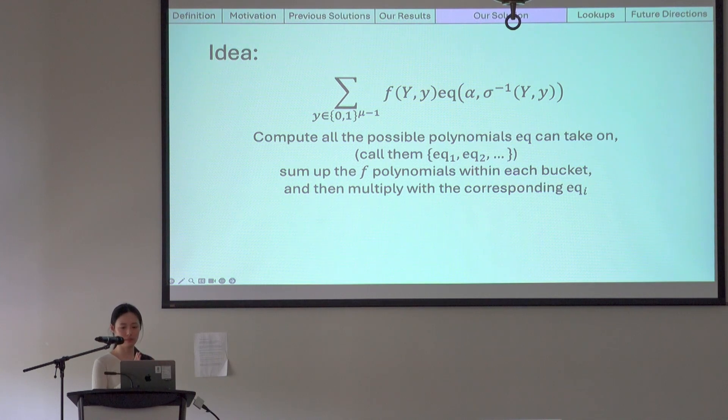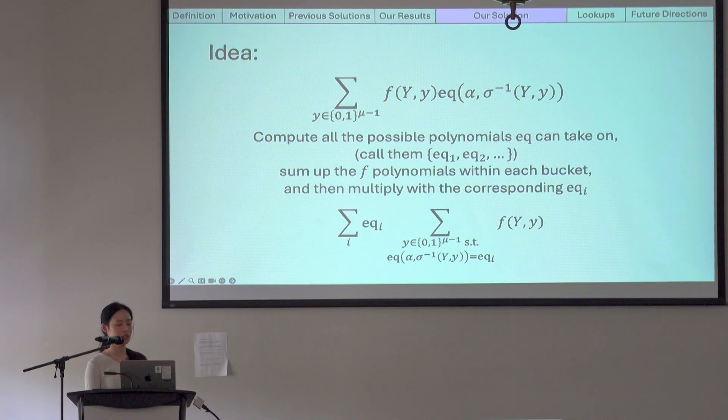So instead of summing up the F polynomials within each bucket of EQ, we can sum up each F polynomial within each bucket of EQ, and then multiply with the corresponding EQI. Then the number of field multiplications only depends on the total number of buckets. So by the total number of buckets, I mean the total number of distinct polynomials EQ can take on, and the degree of each EQI. This trick would be great if the total number of buckets is sublinear.